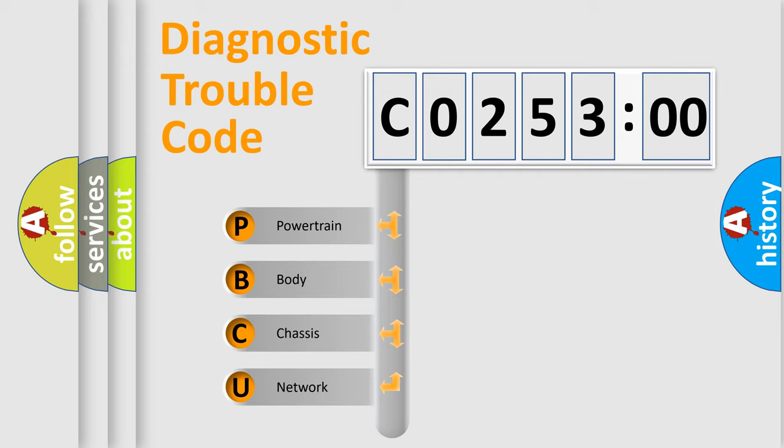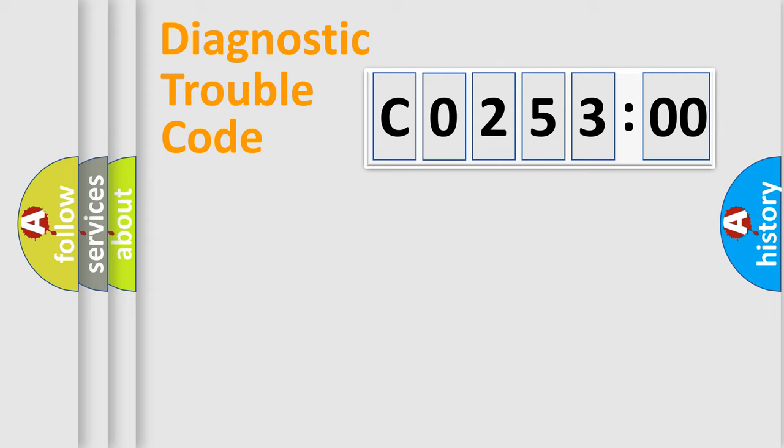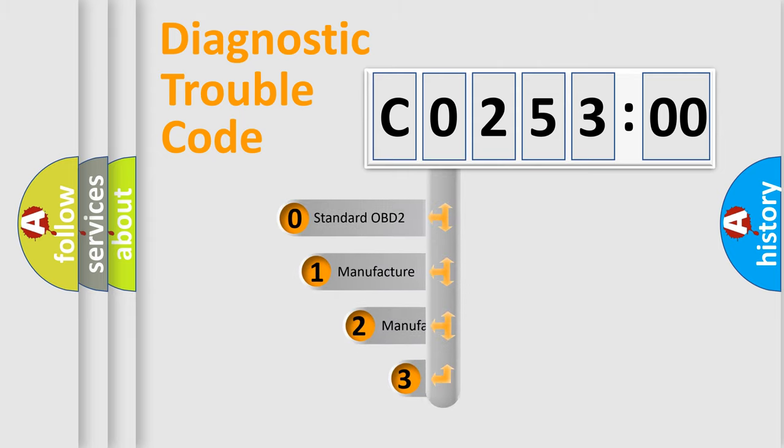We divide the electric system of automobile into four basic units: Powertrain, Body, Chassis, and Network. This distribution is defined in the first character code.